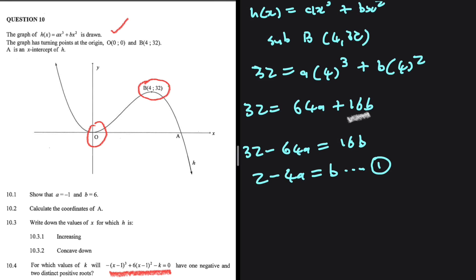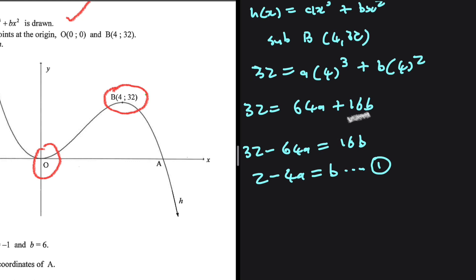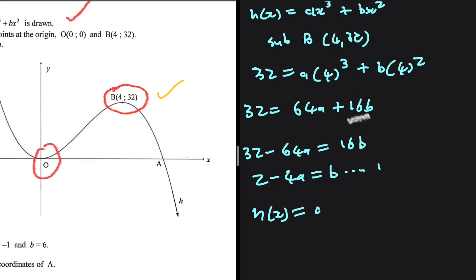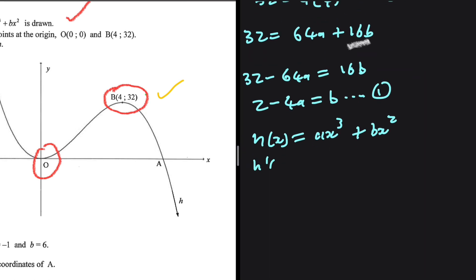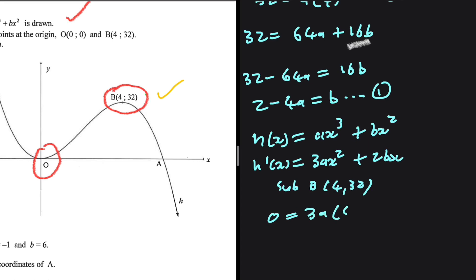We can still exploit the turning point. Since it is a turning point, we find the derivative of h of x and substitute the same coordinate. H of x equals ax³ plus bx², so h prime of x equals 3ax² plus 2bx. At the turning point the gradient is 0, so substituting x equals 4 gives us 0 equals 3a times 4² plus 2b times 4, which is 0 equals 48a plus 8b.